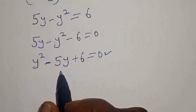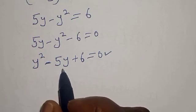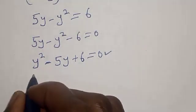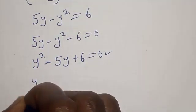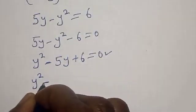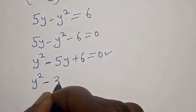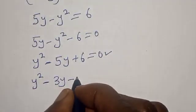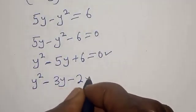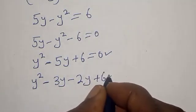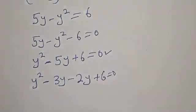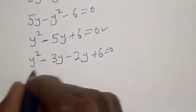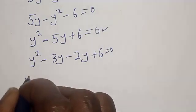Now in this case, we are going to make use of the factorization method. We have y squared minus 3y minus 2y plus 6 is equal to 0. Then let's factor y out.